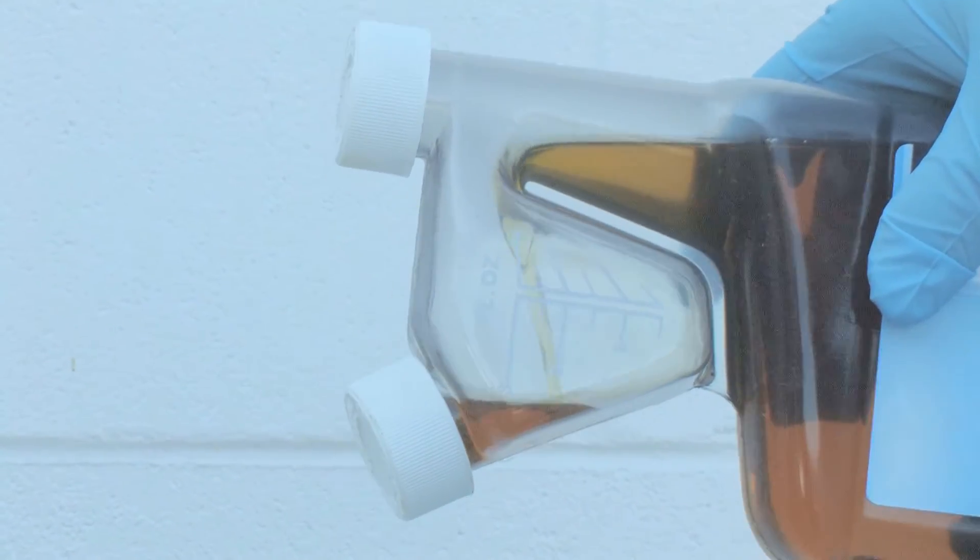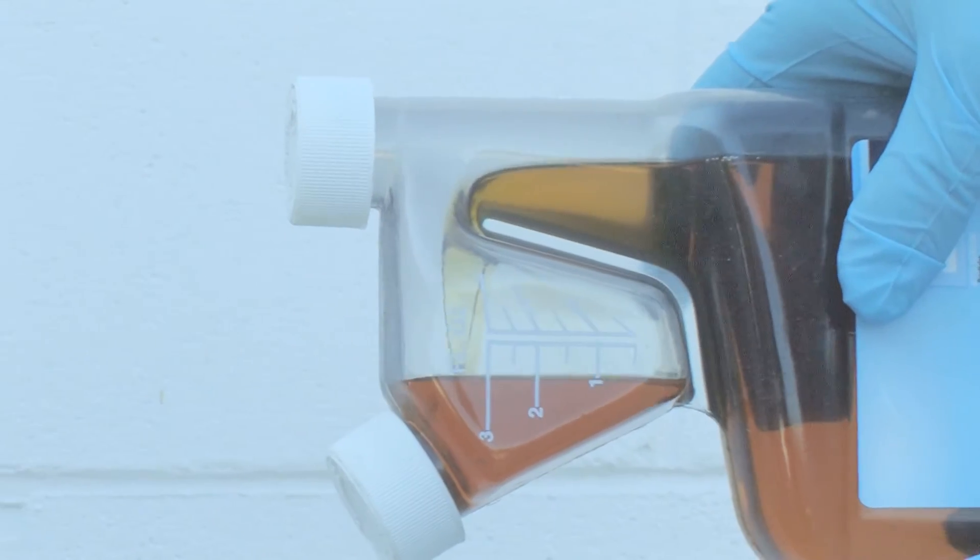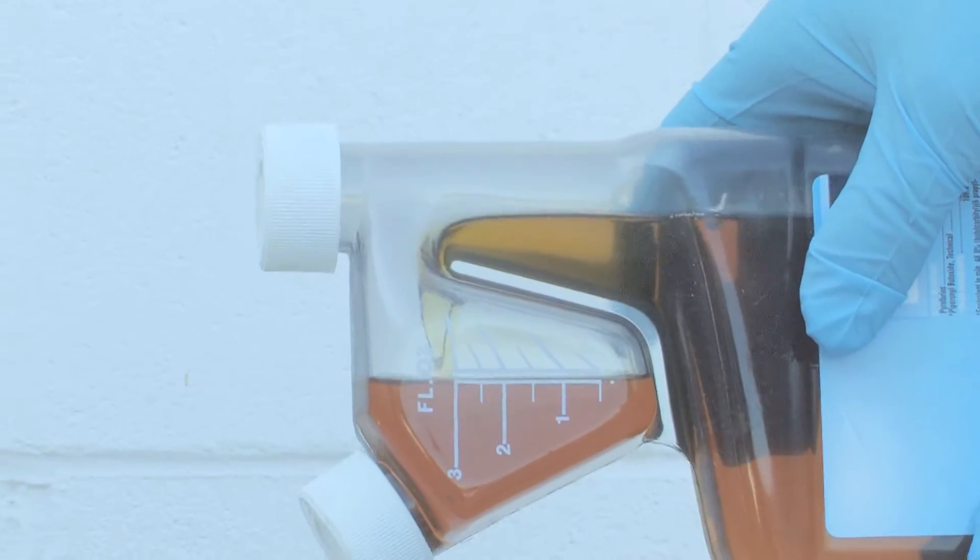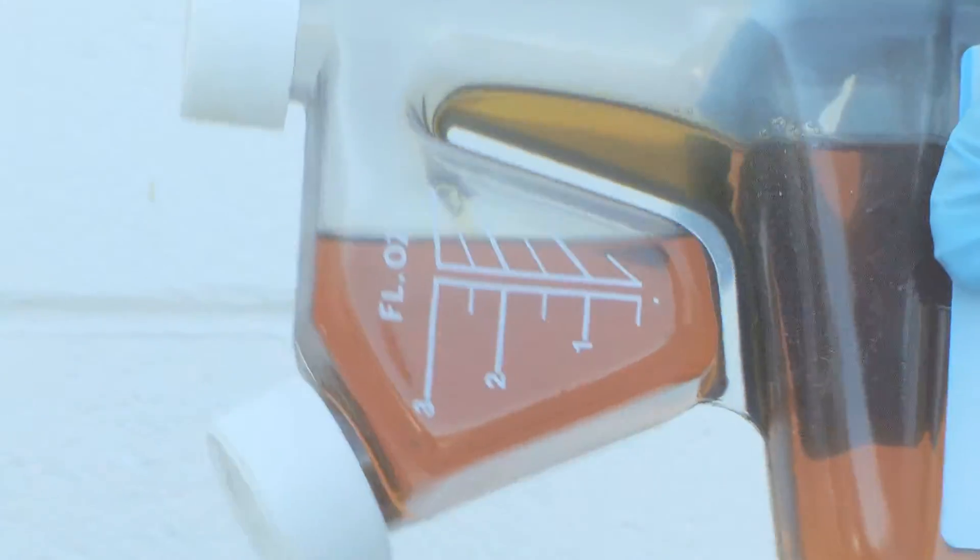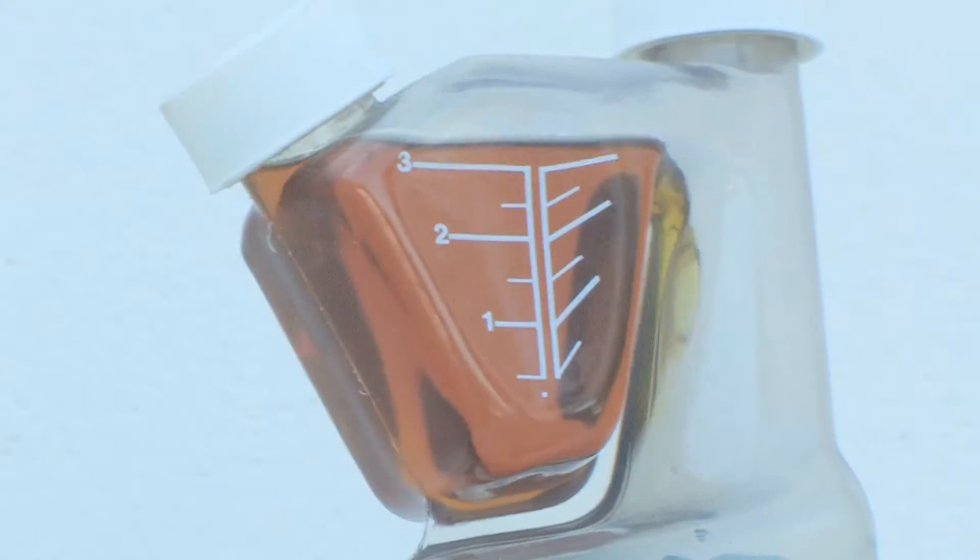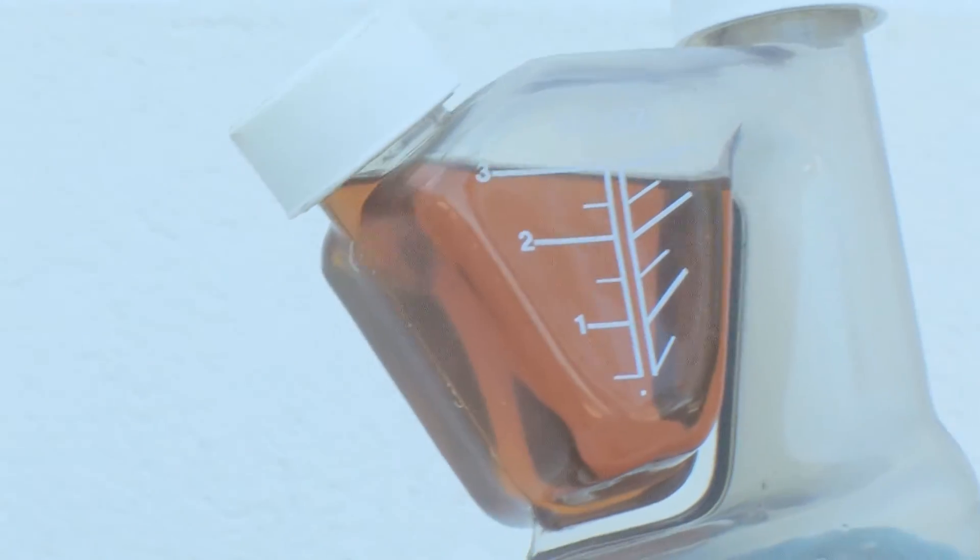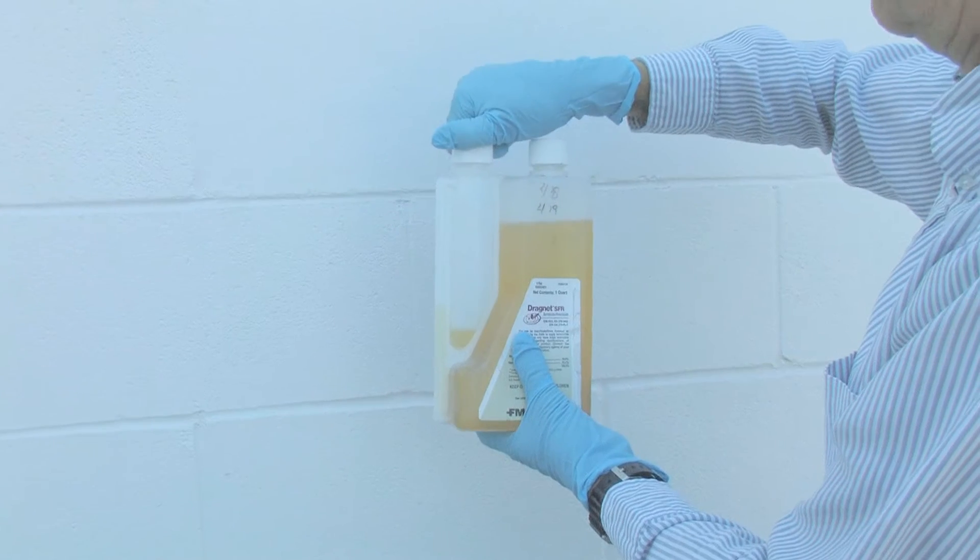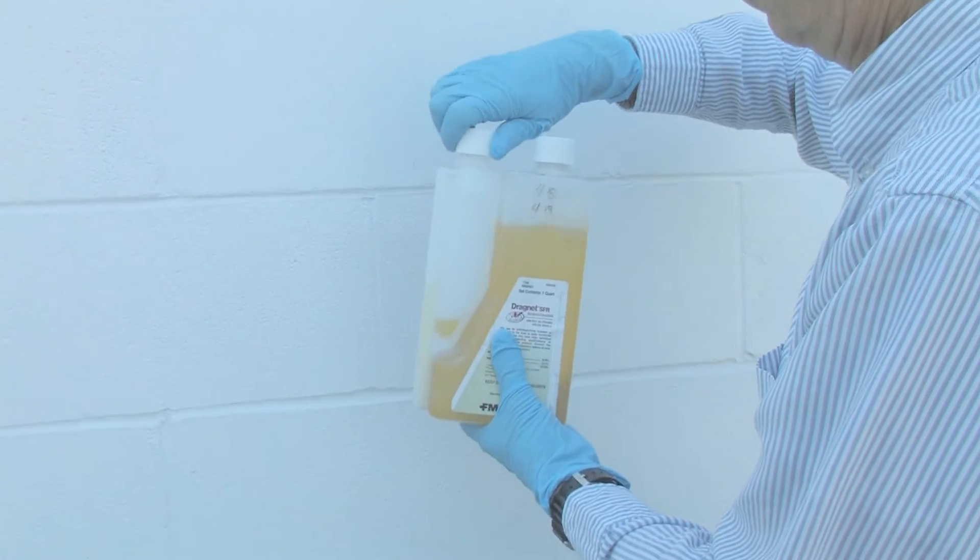One is a tip and pour container. In this case, you pour a certain amount of product into the measuring part of the pesticide container. Make sure it's up to the level you want so you know exactly what you've measured out.